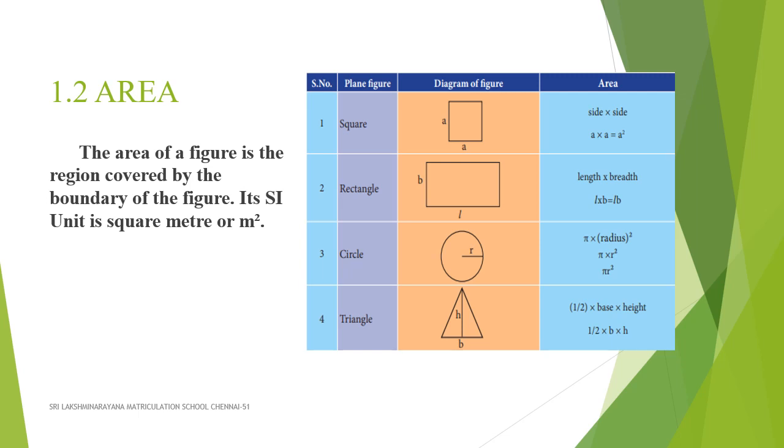Area of some regularly shaped figures are given in a table. Area of a square is A into A. Area of rectangle is length into breadth. Area of circle is pi r square. Area of triangle is half of BH.